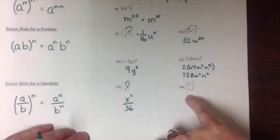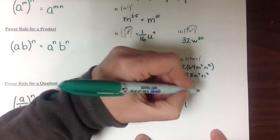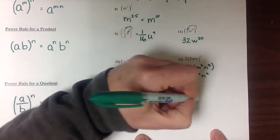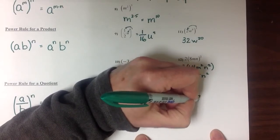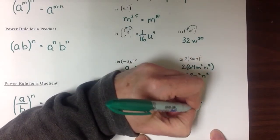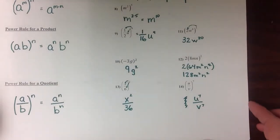And here, where both of our terms are variables, we're just going to get u to the 7th over v to the 7th.